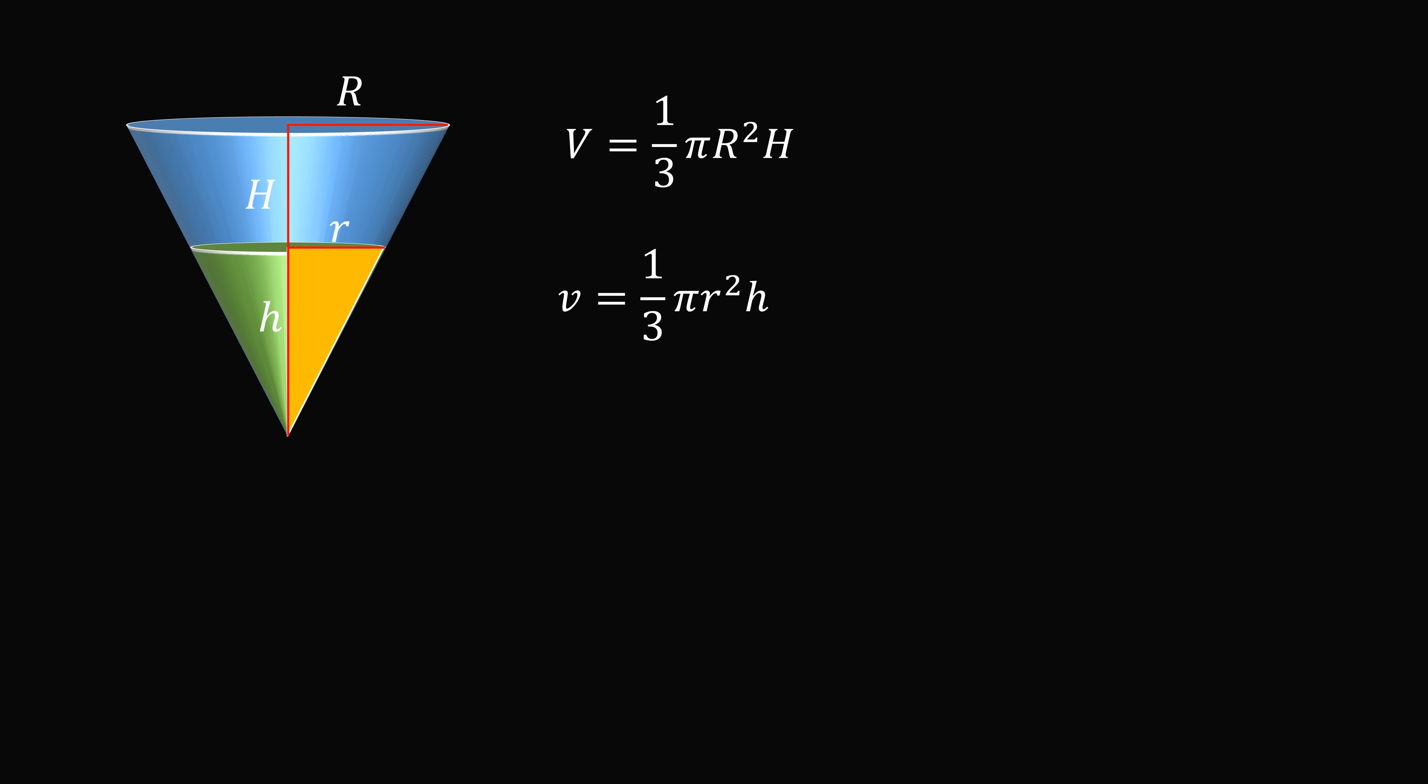Notice in the smaller cone we have a right triangle or we have one leg that's r and another leg that's h. In the larger cone we're going to have another right triangle where the two legs are the radius and the height and this triangle will be similar. So we must have the ratio of the corresponding sides will be equal. So we have the ratio of the heights is equal to the ratio of the radii.